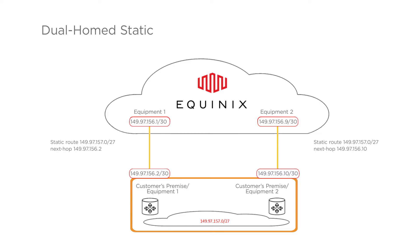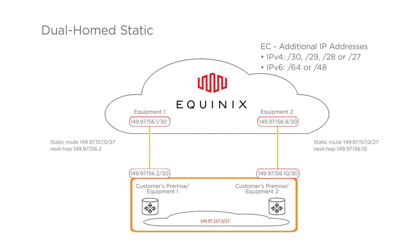The example in the diagram shows a customer with an additional /27 subnet. The customer can purchase additional IP addresses with the following options: IPv4 choices are /30, /29, /28, or /27; IPv6 choices are /64 or /48.